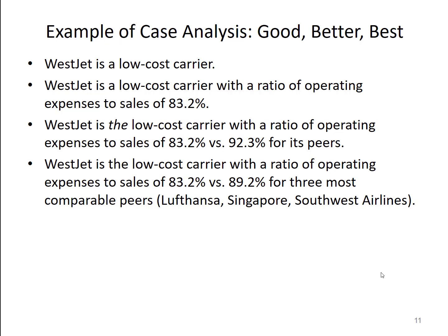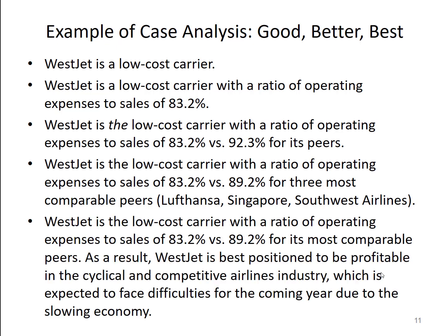We've looked internally and used a financial ratio to support a qualitative statement, but we should also look externally and bring a top-down perspective. You could say that WestJet is the best-performing airline in what is a cyclical and competitive industry — and at a time when the economy is doing poorly, WestJet is potentially going to do better than its peers. That is an example of combining top-down and bottom-up analysis from your size-up to make a convincing statement.